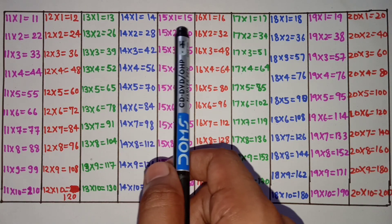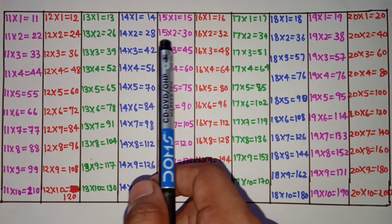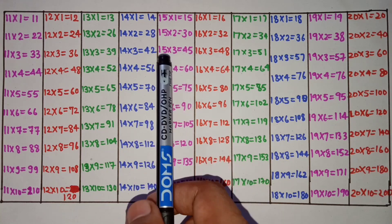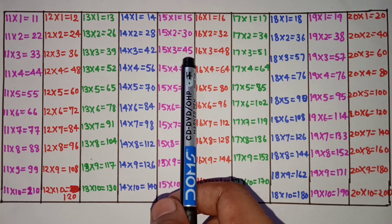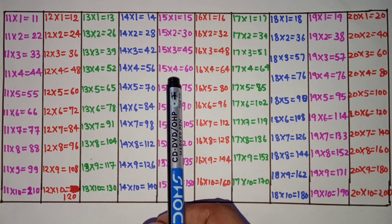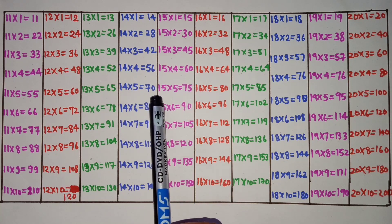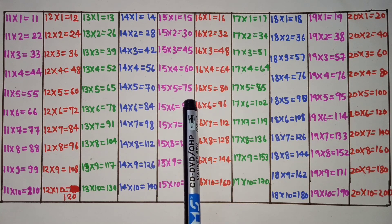15 1s are 15, 15 2s are 30, 15 3s are 45, 15 4s are 60, 15 5s are 75.